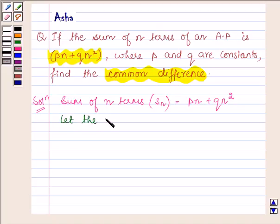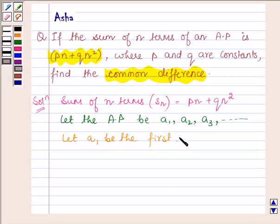Let the AP be A1, A2, A3, and so on. Let us first find the first term by replacing n by 1. So A1 equals P times 1 plus Q times 1 square, which equals P plus Q. This is the first term.